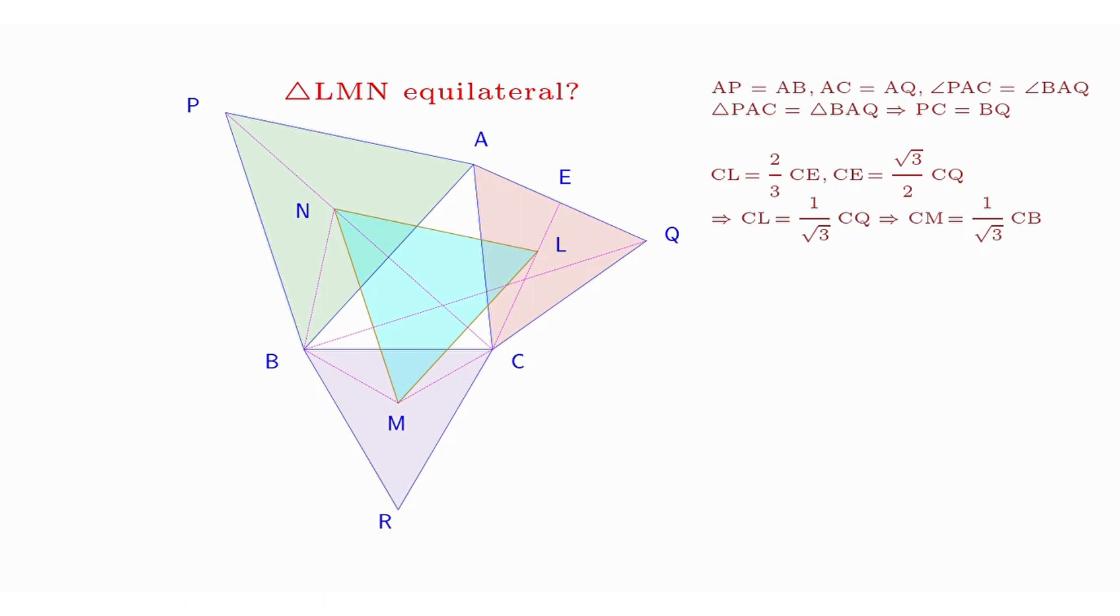By the same way, one can derive CM equals CB divided by √3. Note also that angle MCL consists of angles BCA, MCB, and ACL. The last two angles equal 30 degrees. Thus, angle MCL equals angle BCA plus 60 degrees, as does angle BCQ.